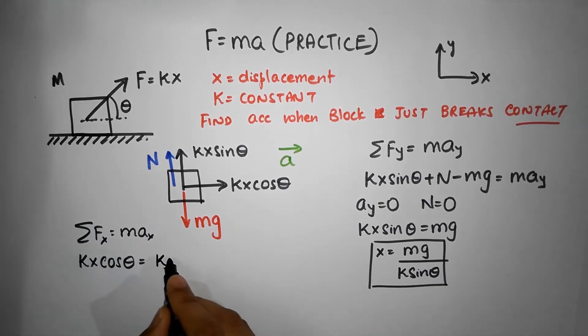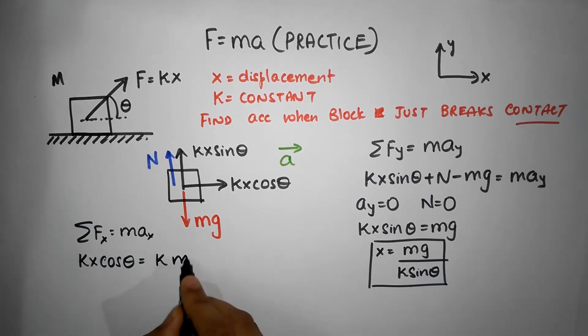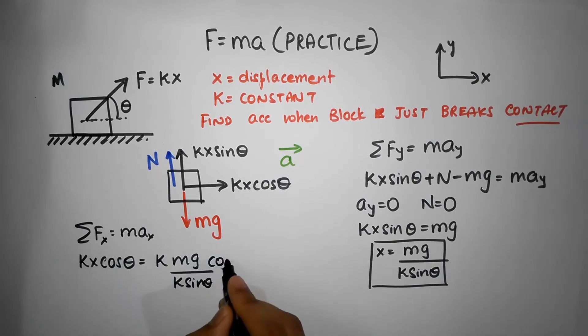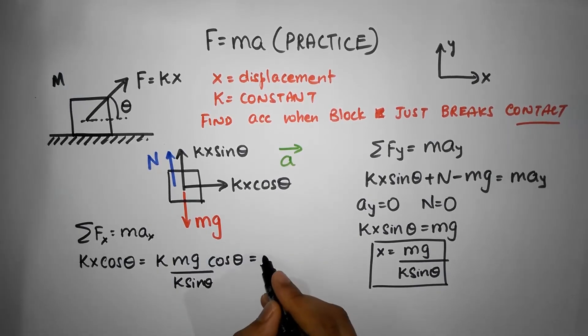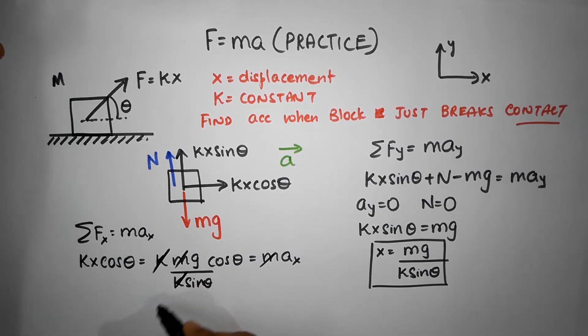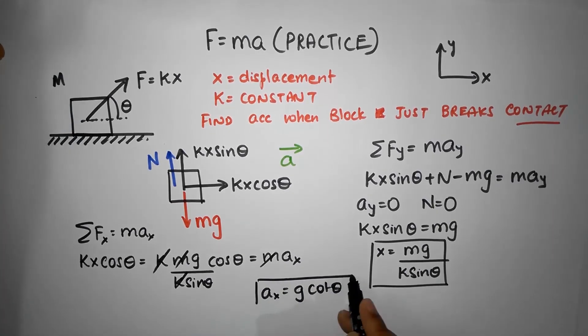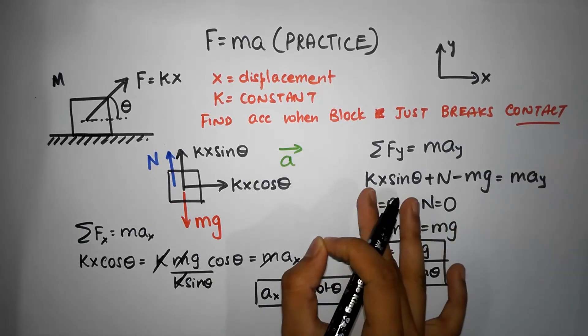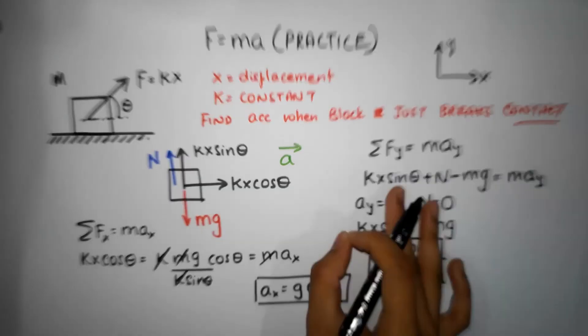Mass cancels, k cancels, so we now have a_x as g cot theta. That's the acceleration when it just breaks contact.